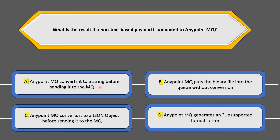That leaves us with two options. Option A says AnyPoint MQ converts it to a string before sending it to MQ — this sounds reasonable, as AnyPoint MQ has many REST APIs and passing it as a string would be a simple and easy approach. Option D says AnyPoint MQ generates an unsupported format error — this could also be correct, but we need to check the documentation to verify. Let's go to the AnyPoint MQ documentation to validate these two options.